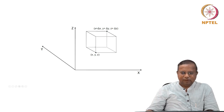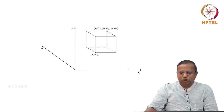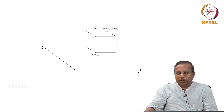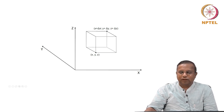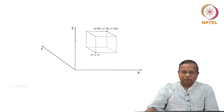We are going to consider a certain cuboidal region in this rectangular Cartesian coordinate space. This is the cuboid here that we have drawn; x, y, z could be very different. The coordinates of this point are x, y, and z. The coordinates of the diametrically opposite corner are x plus delta x, y plus delta y, z plus delta z. Which means this length is delta x, this is delta y, and this distance is delta z. This is where we are going to develop our balances.